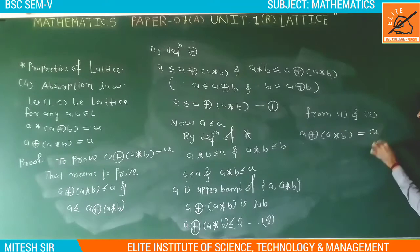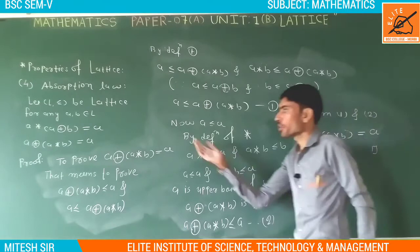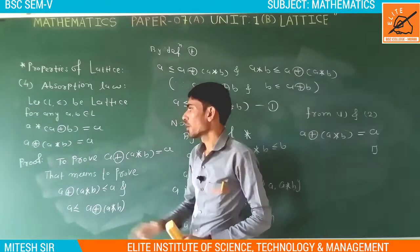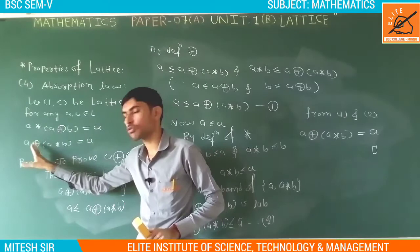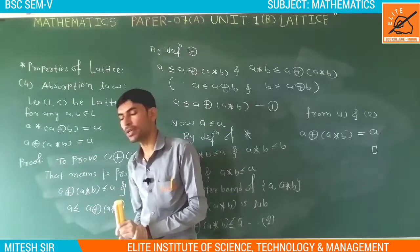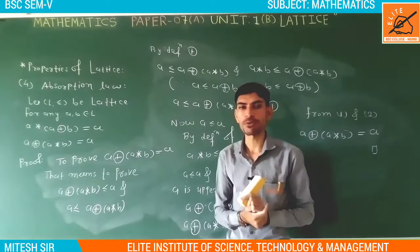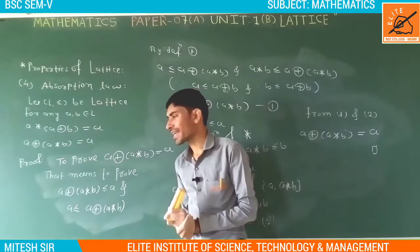A ring sum (A star B) is the least upper bound of {A, A star B}. By the relation between least upper bound and upper bound, A ring sum (A star B) is related to the upper bound A. This is result two. From one and two, A ring sum (A star B) is equal to A. Hence proved. This is the proof of the fourth property — the Absorption Law. In the next lecture, we will discuss the proof of further properties of the lattice.